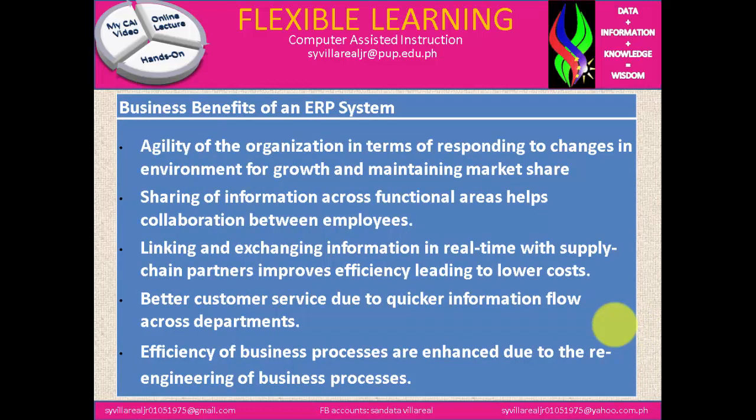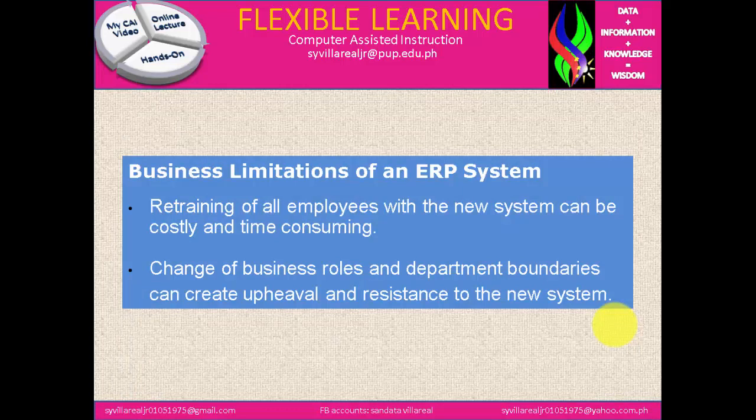Business benefits of an ERP system: agility of the organization in responding to changes in environment for growth and maintaining market share. Sharing of information across functional areas helps collaboration between employees. Linking and exchanging information in real time with supply chain partners. Improved efficiency leading to lower costs. Better customer service due to quicker information flow across departments. Efficiency of business processes is enhanced due to re-engineering. Business limitations include: retraining of all employees with the new system can be costly and time consuming — that's why we need to study information technology education. Change of business roles and department boundaries can create upheaval and resistance to the new system.